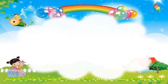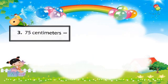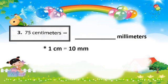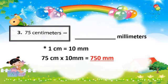Question number 3: Convert 75 centimeters to millimeters. Remember that 1 centimeter equals 10 millimeters. So multiply 75 centimeters by 10 millimeters, and it will give you a product of 750 millimeters. So 75 centimeters equals 750 millimeters.